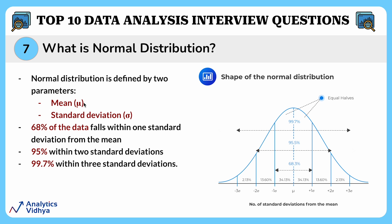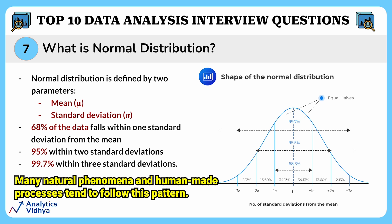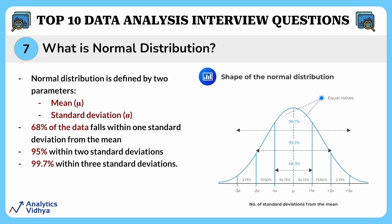Normal distribution is defined by two parameters: the mean, which represents the central value, and the standard deviation, which measures the spread or dispersion of the data. Approximately 68% of the data falls within one standard deviation from the mean, 95% within two standard deviations, and 99.7% within three standard deviations. Normal distributions are vital in data analysis because many natural phenomena follow this pattern, and they are crucial for statistical tests, hypothesis testing, and predictions in fields like finance, quality control, and scientific research.